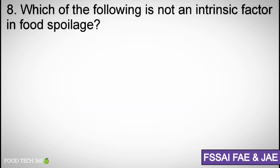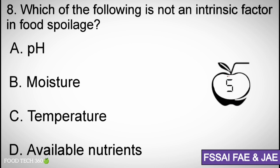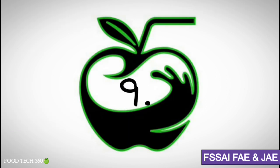Question number 8. Which of the following is not an intrinsic factor in food spoilage? A. pH, B. Moisture, C. Temperature, D. Available nutrients. Correct answer: C. Temperature.